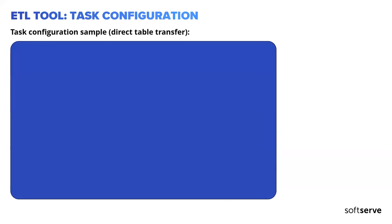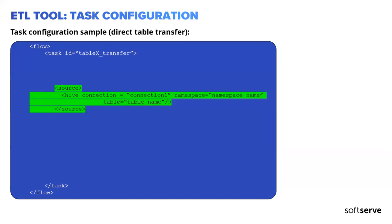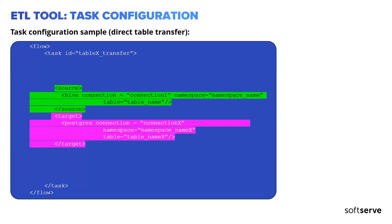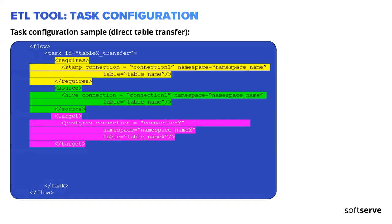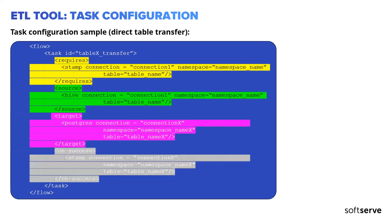Let's look at a configuration example for our tool. The first one is a direct table transfer — a flow and task definition. Inside we have a source defined with a connection, namespace, and table name. There is also a dependency section specifying which stamp needs to be checked prior to running the transfer, or which stamp we need to wait for in the stamp service. We also have an 'on success' section — typically we set a stamp indicating this given transfer completed successfully.